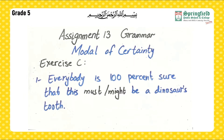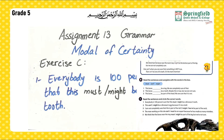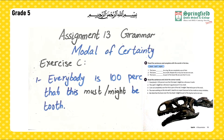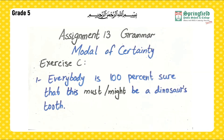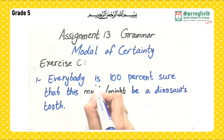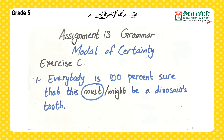Exercise C: Read the sentences and circle the correct word. I'll do the first one: 'Everybody is a hundred percent sure that this ___ be a dinosaur's tooth' — must or might? Since we are a hundred percent sure, the answer is 'must.' 'Everybody is a hundred percent sure that this must be a dinosaur's tooth.'